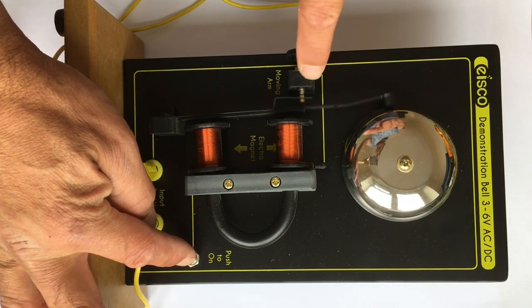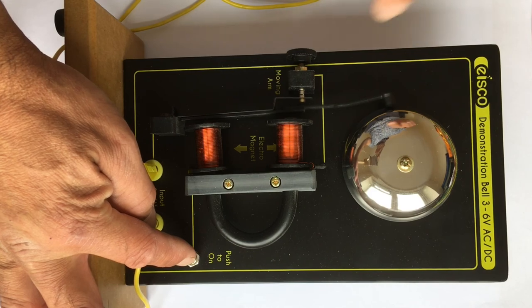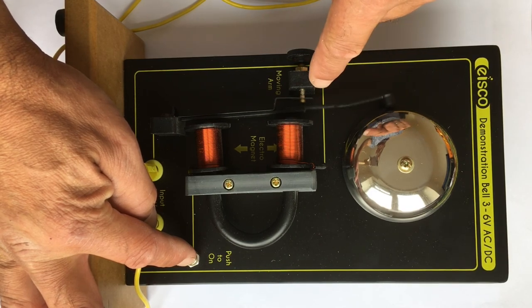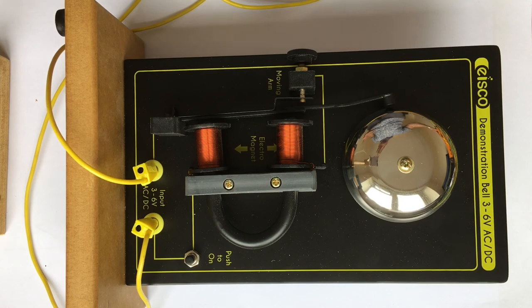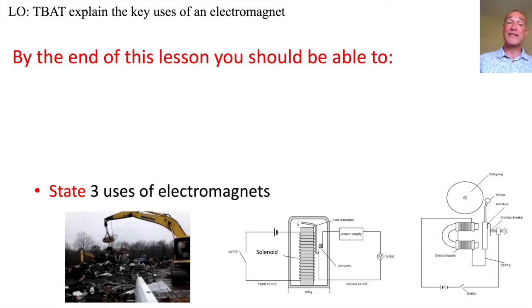And you might just be able to see some sparking here as that moves. So that is how an electric bell works. So there we have it, three different uses of electromagnets: first of all picking up magnetic material maybe in a scrapyard, secondly the solenoid controlling a high voltage circuit using a low voltage circuit with no electrical connection between them, and finally the old-fashioned electric bell.